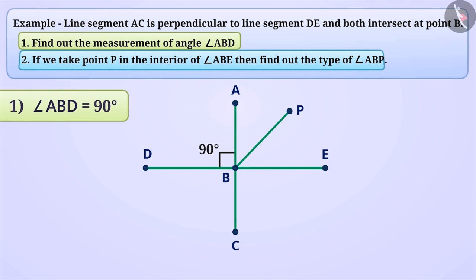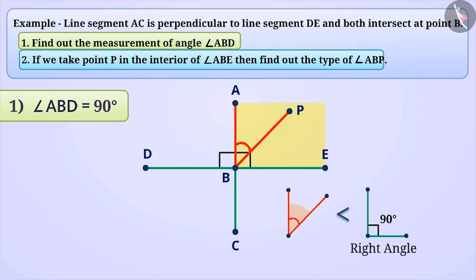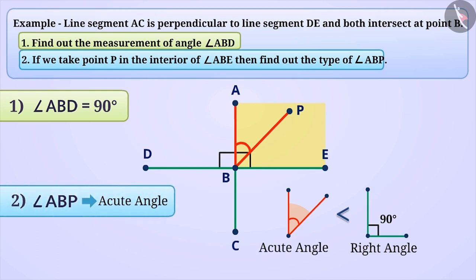Similarly, angle ABE is also equal to 90 degrees. Point P is in the interior of angle ABE. Therefore, the measurement of angle ABP will be lesser than 90 degrees. If the angle is less than a right angle, that is 90 degrees, then it is an acute angle. Hence, here angle ABP is an acute angle.